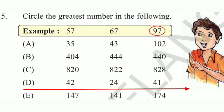D. In this, 42, 24, 41. Which is the greatest number? Yes. 42 is the greatest number. Okay.